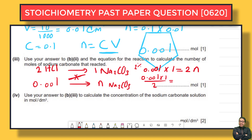Simplifying, we divide 0.001 by 2. Use your calculator — the answer should be 0.0005. So the number of moles of sodium carbonate that reacted is 0.0005 mol.